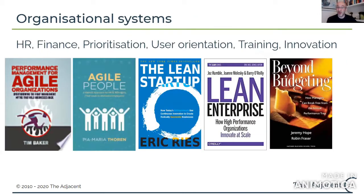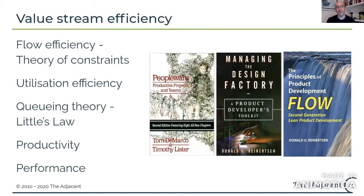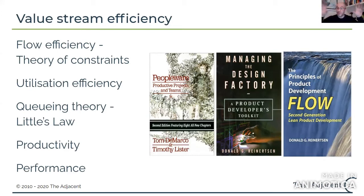We'll also need to pick our HR model, finance model, and prioritization model. The key is: if we pick ones that are contrary to each other we create friction throughout the organization; if we pick aligned ones we hopefully have a great life. In terms of efficiency, are we going to use old-school utilization efficiency, flow efficiency, Theory of Constraints, Little's Law, queuing theory? Most leaders I ask don't even know what I'm talking about, which means that paradigm is totally up for grabs.